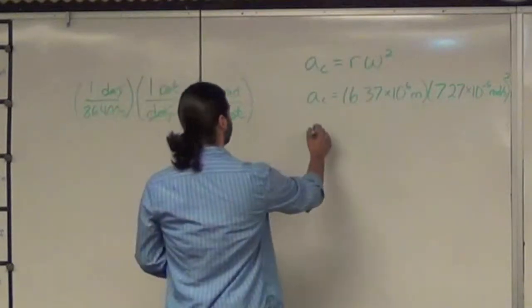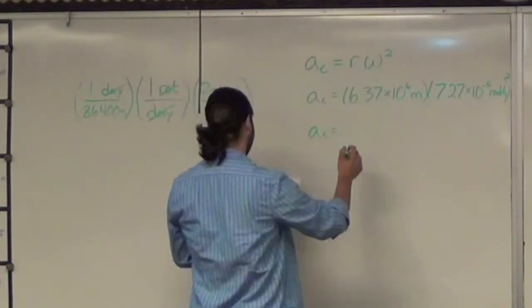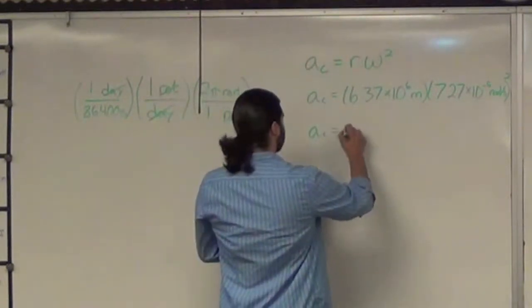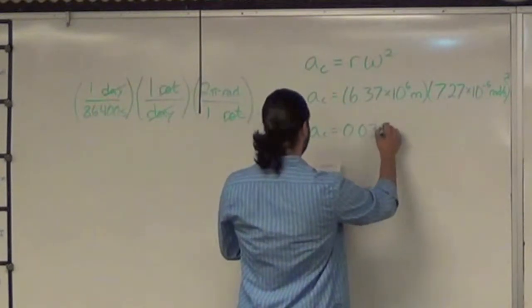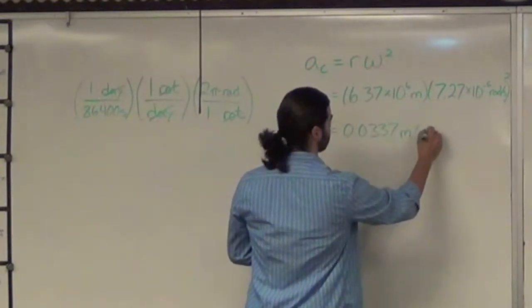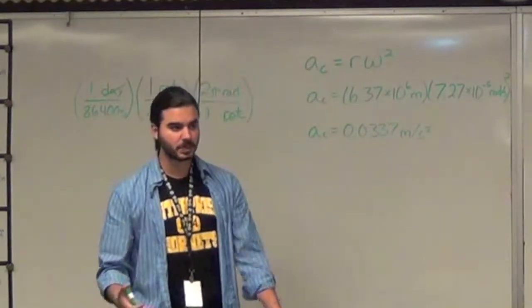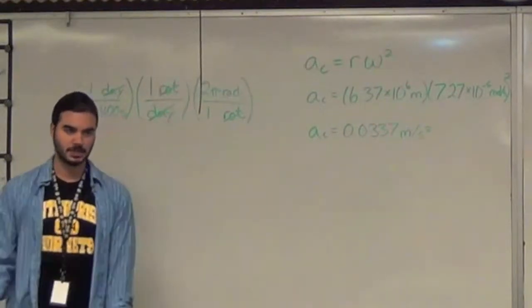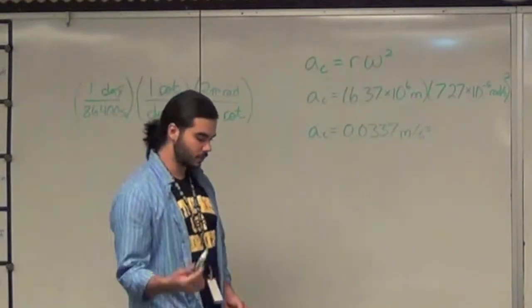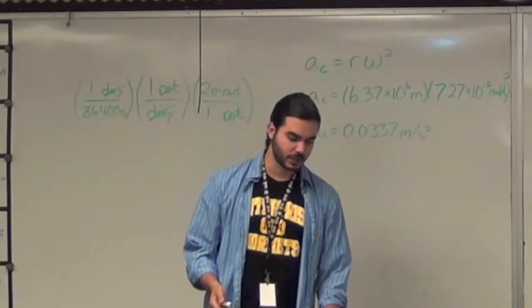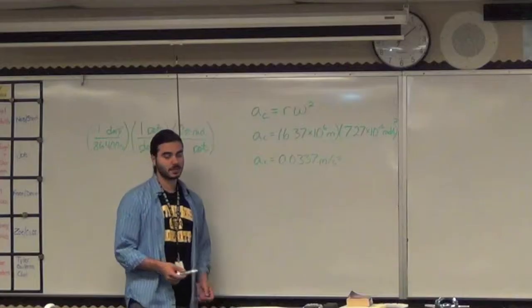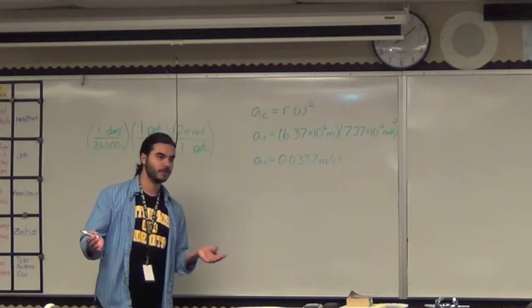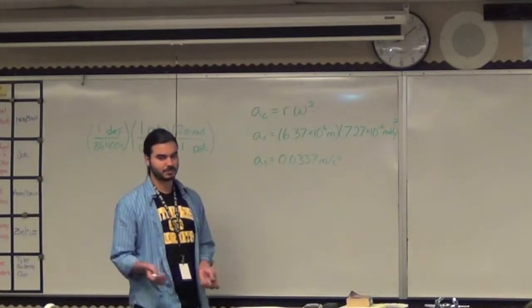If you do that calculation, you end up getting that the acceleration due to the centrifugal force on us right now as we speak due to the spin of the Earth is 0.0337 meters per second squared. As compared to the 9.8 meters per second squared due to gravity, that is negligible. That's why it doesn't seem like we're spinning on the Earth. If you actually figure out the ratio there, it is 1/290th. So technically, someone who weighed 290 pounds would be made one pound lighter because of the centrifugal force, but again, that's relatively negligible.